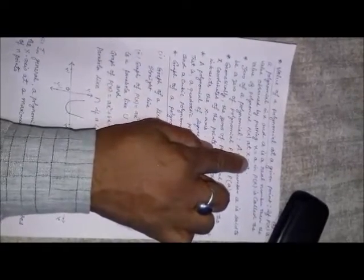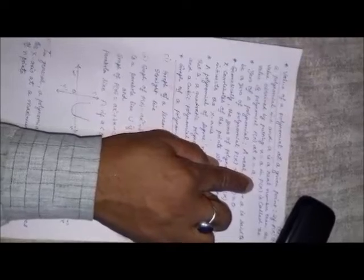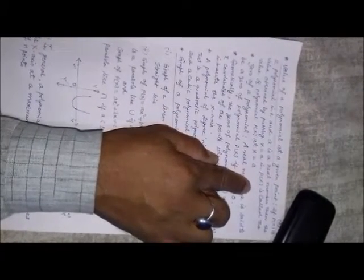Next point is value of a polynomial at a given point. If px is a polynomial in x and a is a real number, then the value obtained by putting x is equal to a in the given polynomial is called the value of polynomial at x is equal to a.